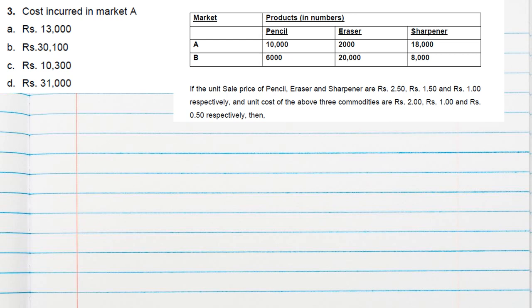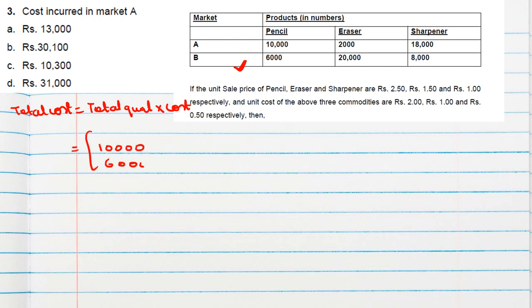Question number three asks for the cost incurred in Market A. Total cost is given by the quantity matrix multiplied by the cost matrix. Using the same quantity matrix — 10,000; 6,000; 2,000 and 20,000; 18,000; 8,000 — we multiply by cost matrix: 2, 1, and 0.5.